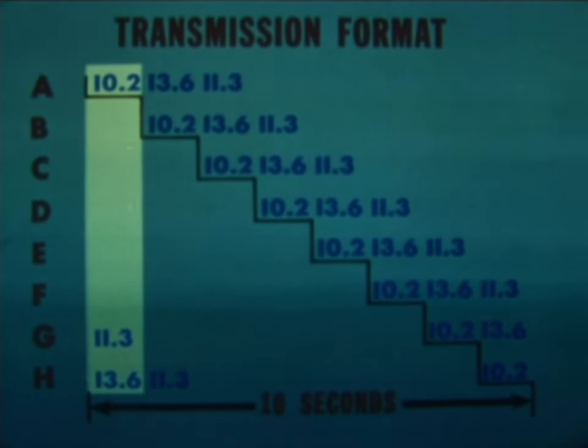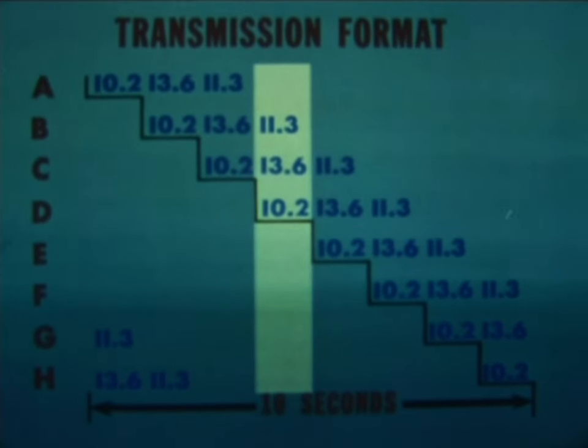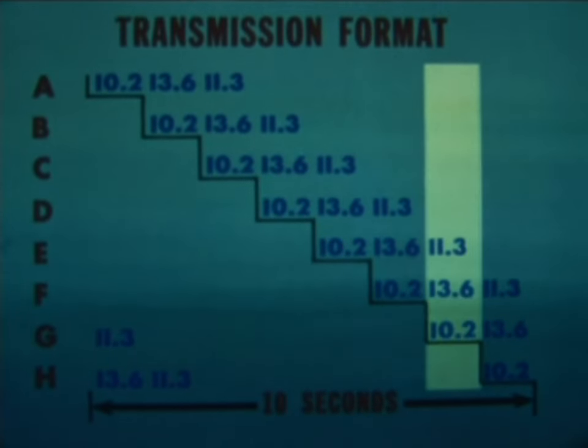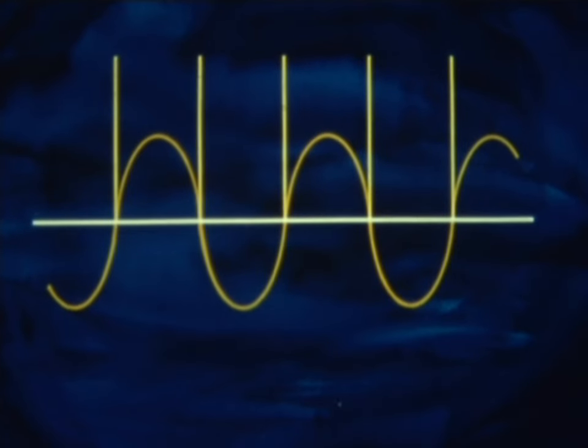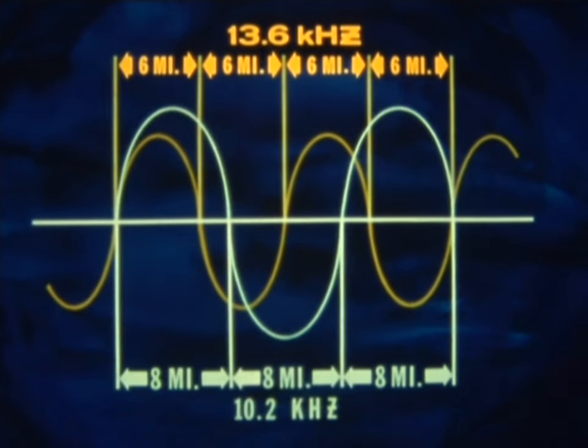The additional frequencies are transmitted during the same time interval of 10 seconds, but the format is arranged so that no two stations are transmitting on the same frequency simultaneously. These particular frequencies were selected because of the relationship between them. For example, the frequency 13.6 kilohertz yields a lane width of six miles, so that four 13.6 kilohertz lanes equal exactly three of the eight mile 10.2 kilohertz lanes.